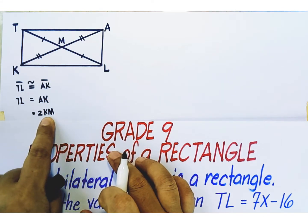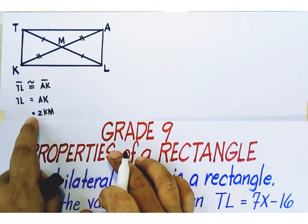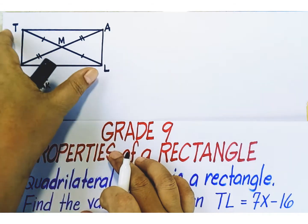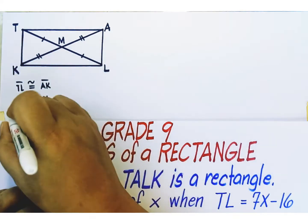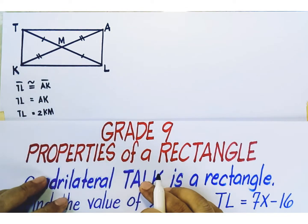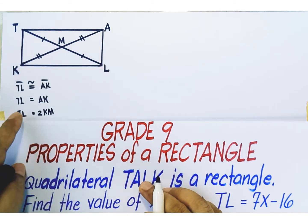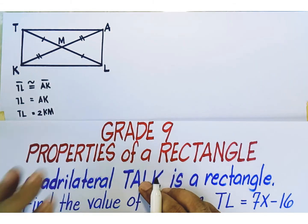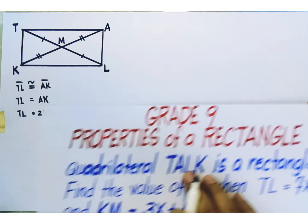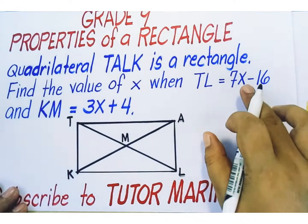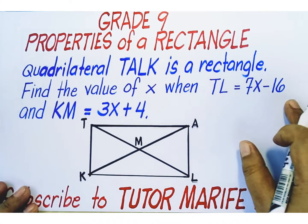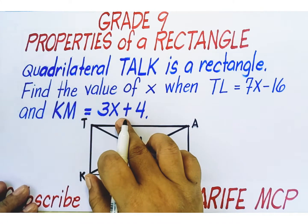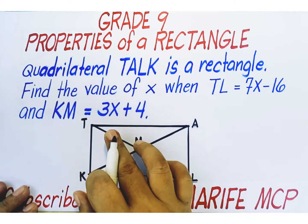Two times KM, or double of length KM. And this is equal to the length of diagonal TL. Now, it's time to replace left side and right side of this equation with their representations. TL is represented as 7x minus 16 and KM is represented as 3x plus 4.